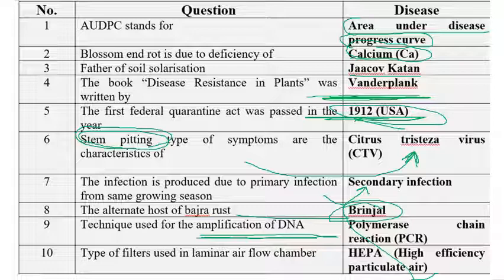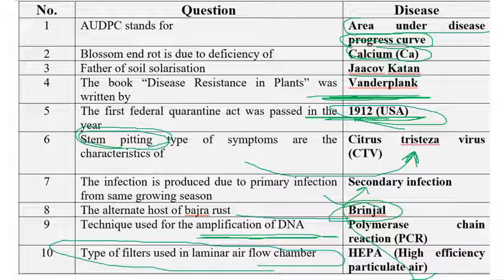The type of filters used in laminar airflow chambers are HEPA filters — High Efficiency Particulate Air filters. The size of the HEPA filter is 0.3 micrometers. Sometimes they ask what size HEPA filter is used in a laminar airflow chamber — it is 0.3 micrometers.